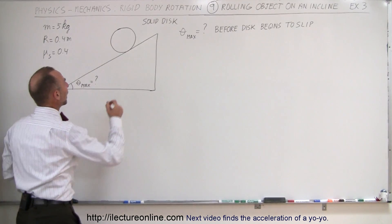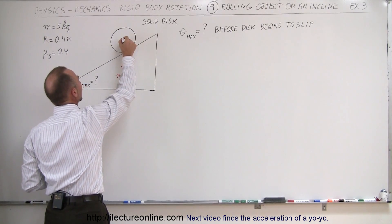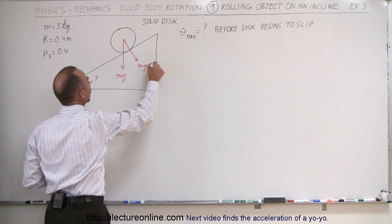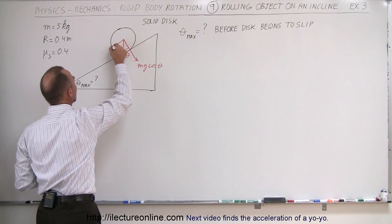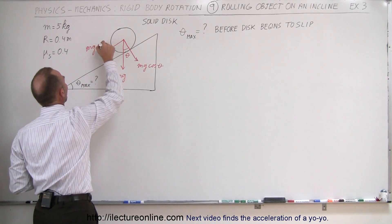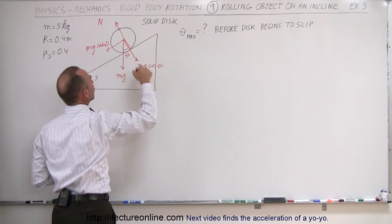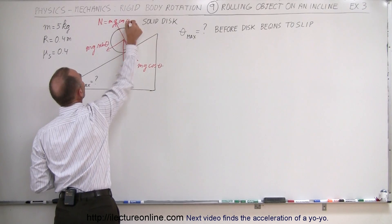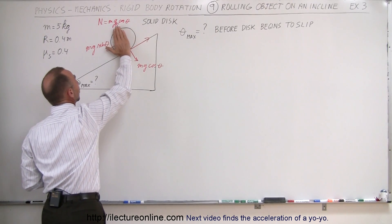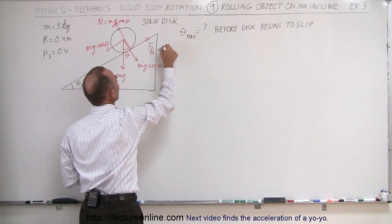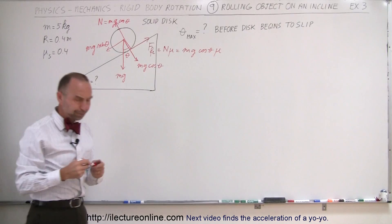Let's start by writing down all the forces acting on the disc. We have the force of gravity mg, the perpendicular component mg cosine theta, and theta is the angle we're looking for. The force pushing the wheel down the incline is the parallel component mg sine theta. The normal force pushing back equals mg cosine theta, and the friction force causes the rotation of the wheel. Without friction the wheel would simply slide, but with friction the wheel rotates. The friction force equals the normal force times mu, so F_friction = mg cosine theta times mu.